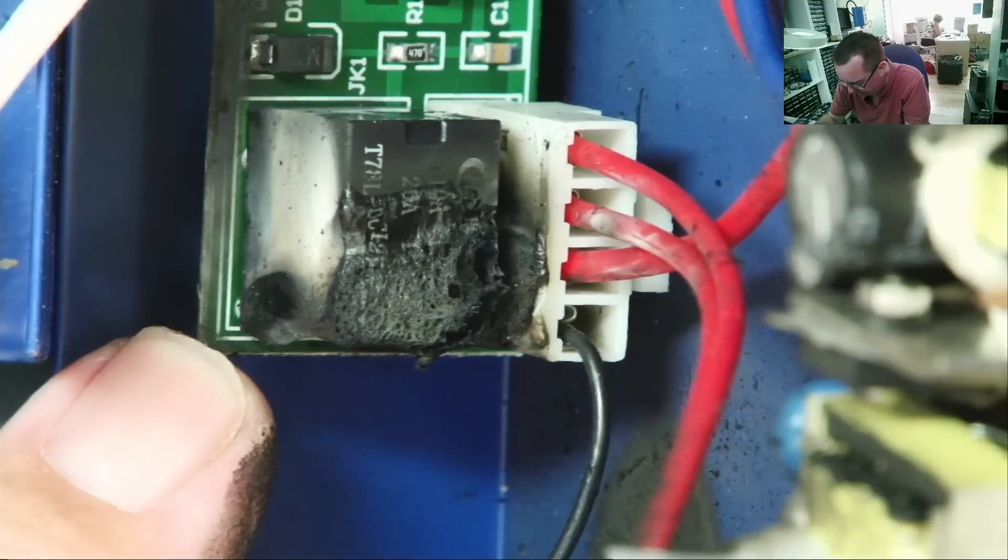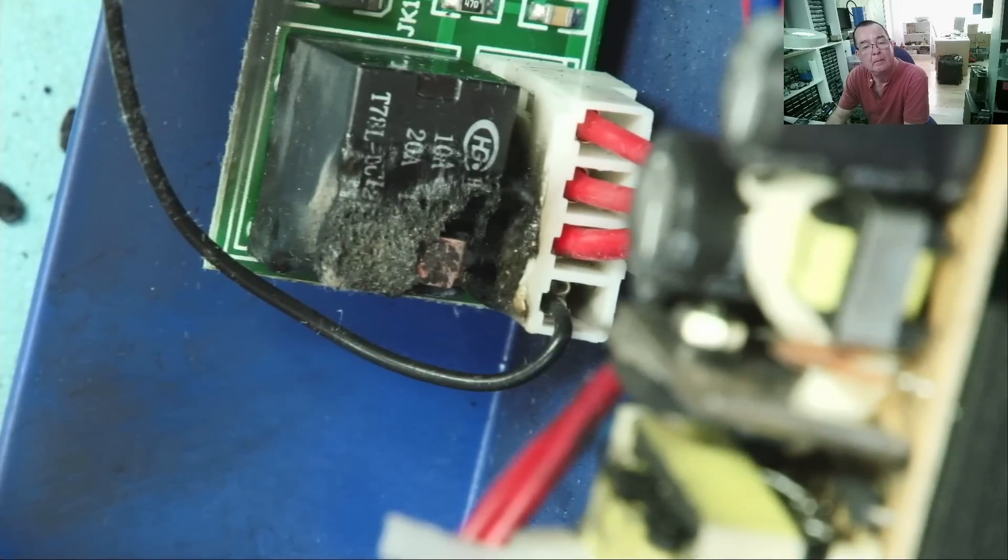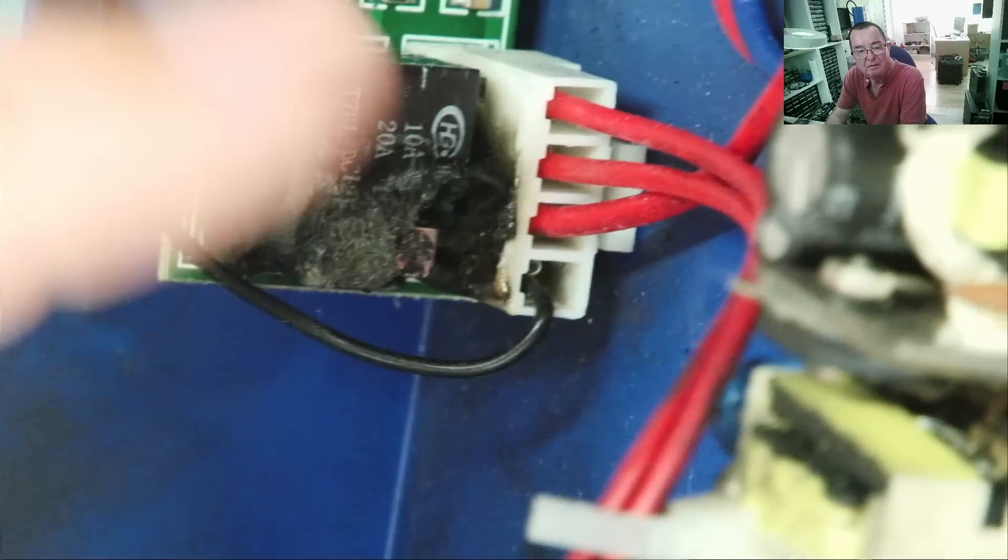Yeah, it just has DC 12 volts on. Looks like the contacts have burnt out on this relay to me. It's a very strange failure mode. Really? That's not common. This is all horrible black stuff. It's all over my fingers now.